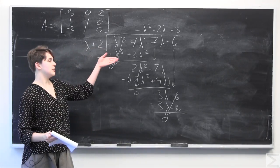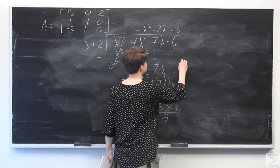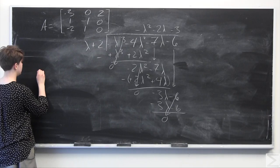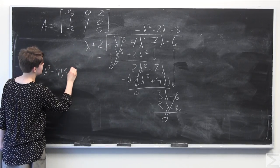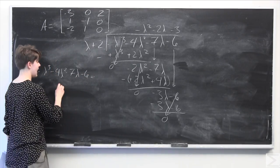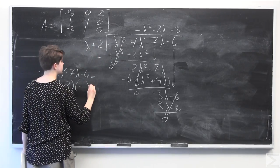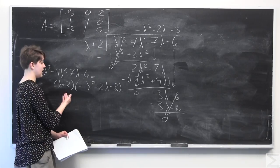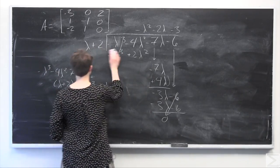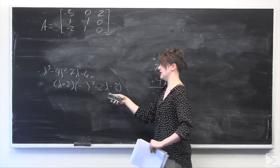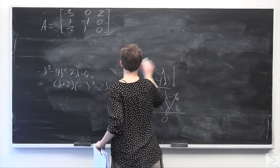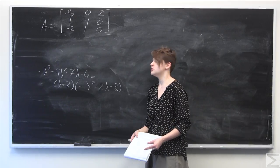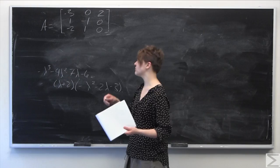Having completed the polynomial long division, we can write the characteristic polynomial — negative lambda cubed minus 4 lambda squared minus 7 lambda minus 6 — as lambda plus 2 times negative lambda squared minus 2 lambda minus 3. We already have one eigenvalue: lambda equals negative 2. Now we need to find the roots of negative lambda squared minus 2 lambda minus 3, which, as we'll find, has no real roots.